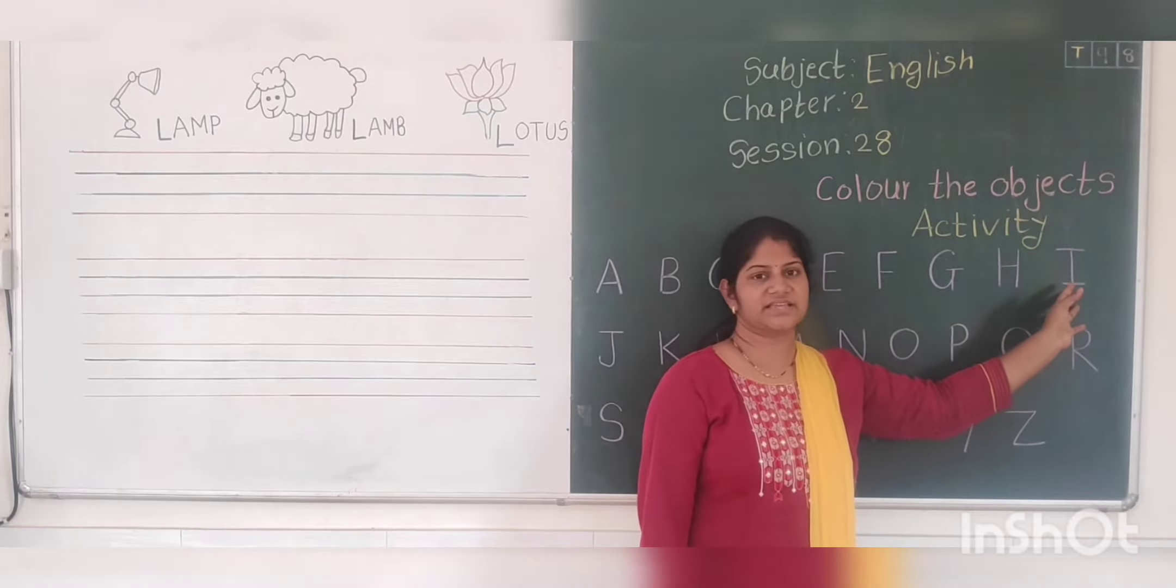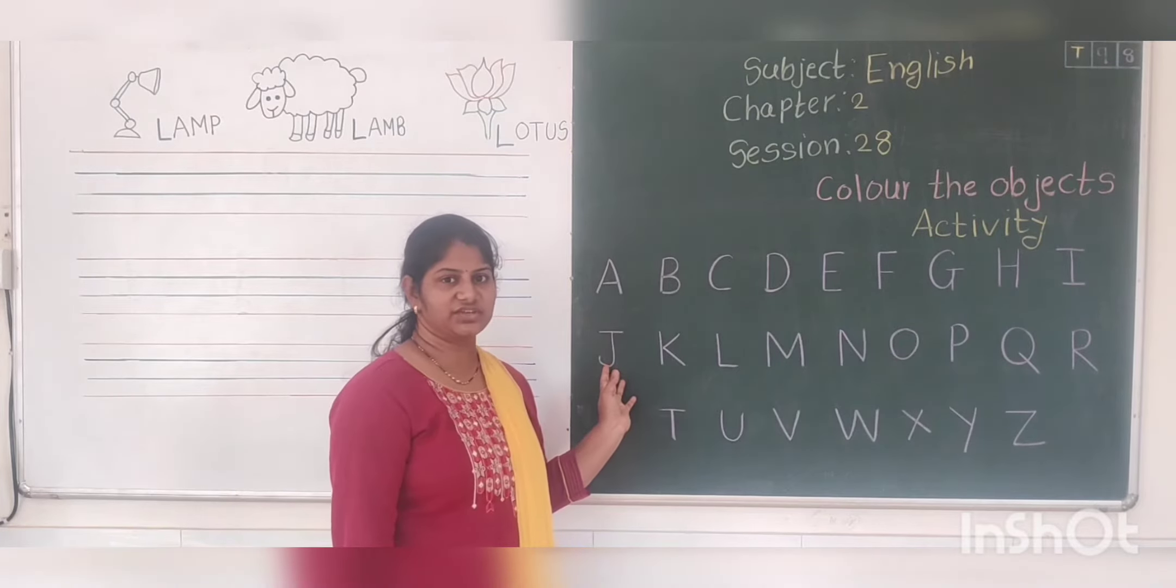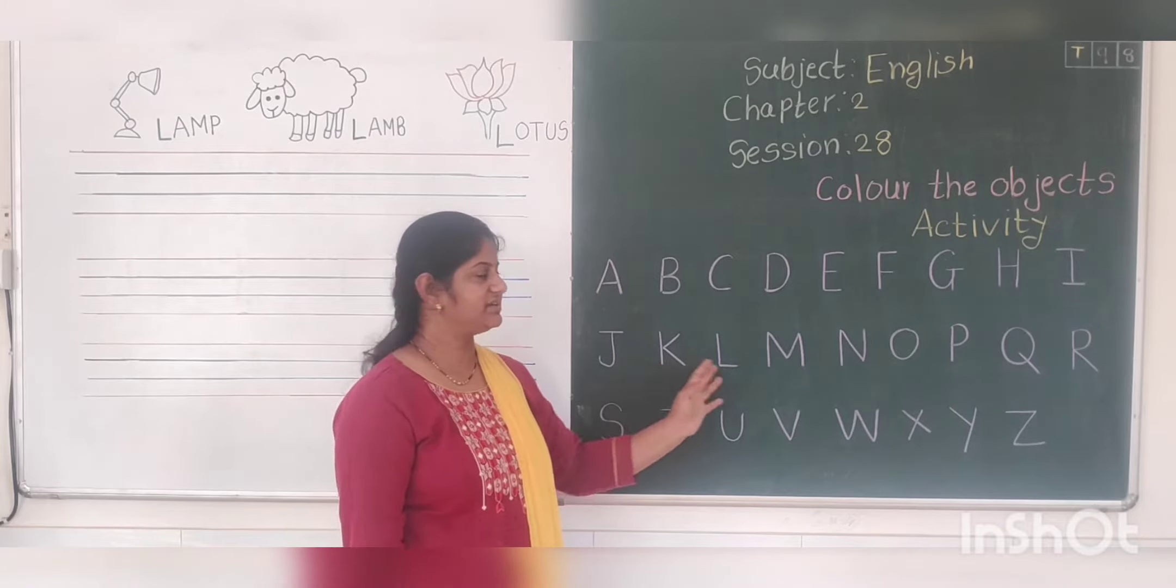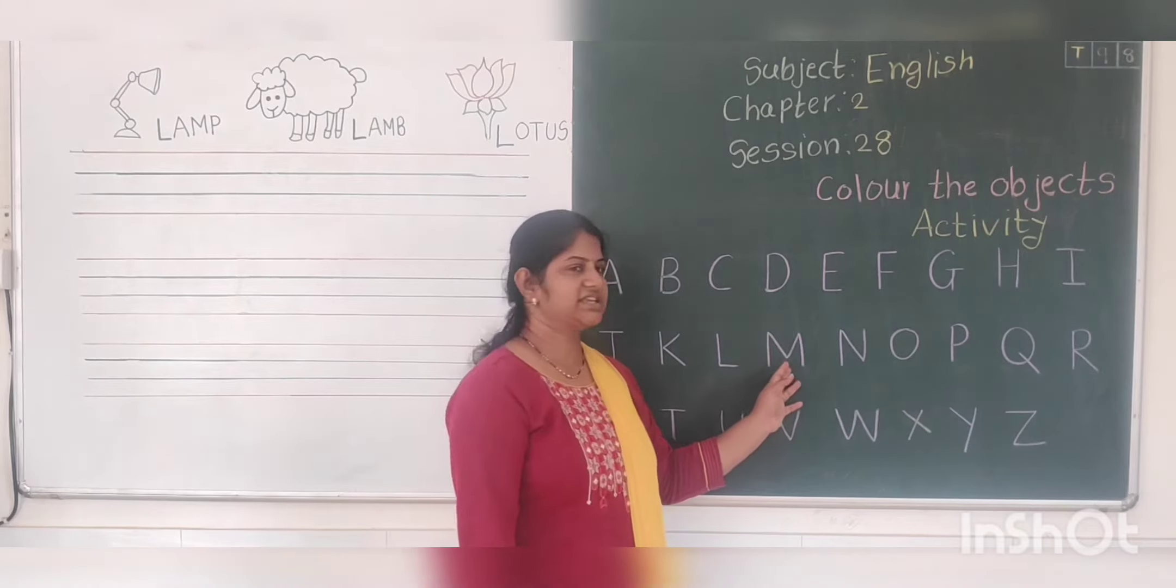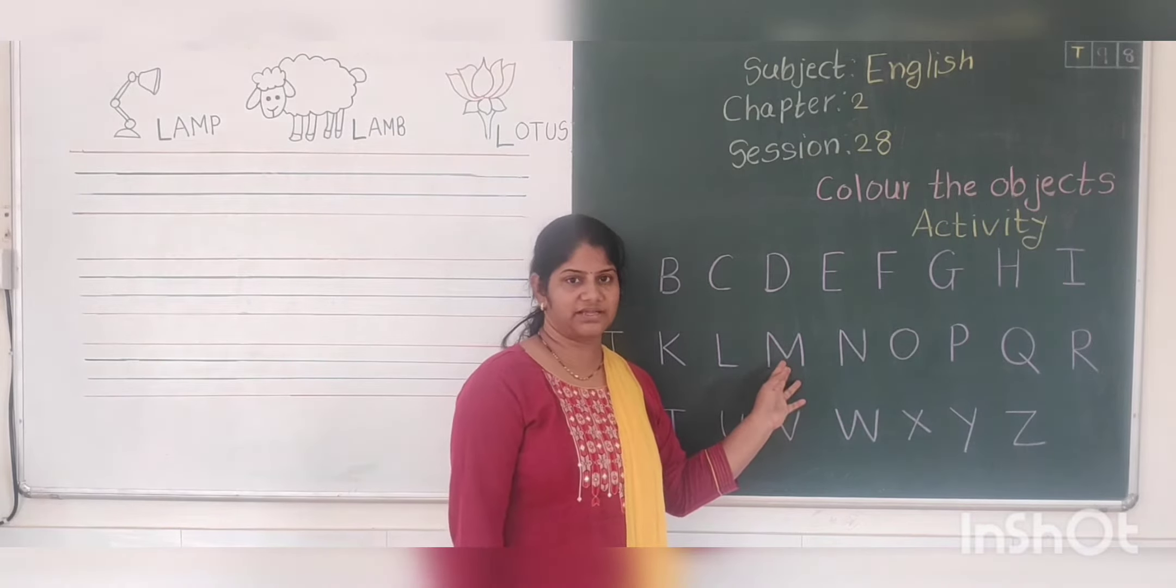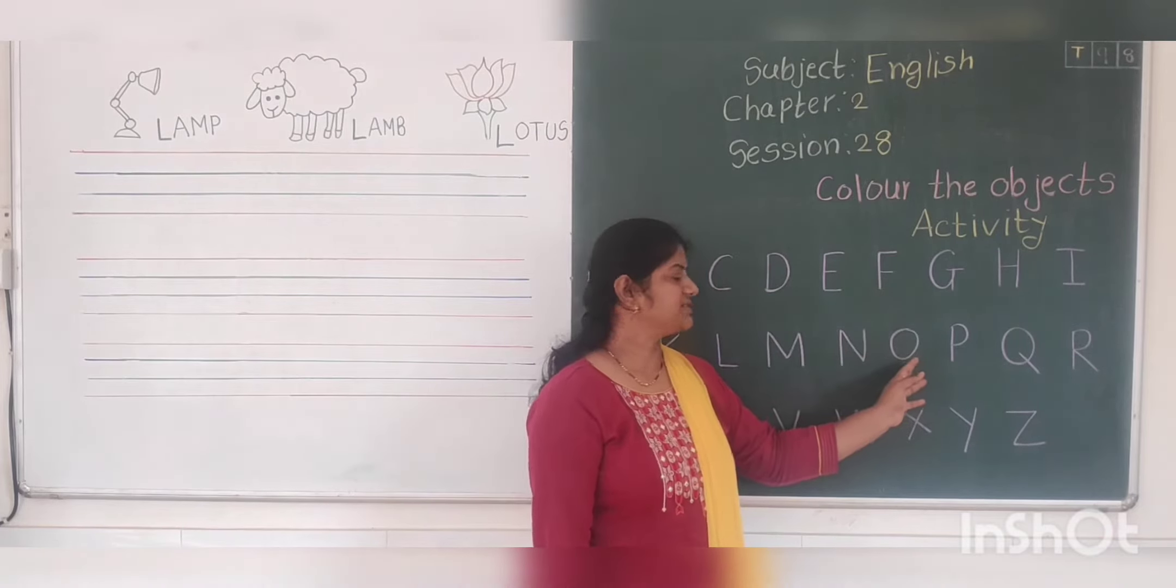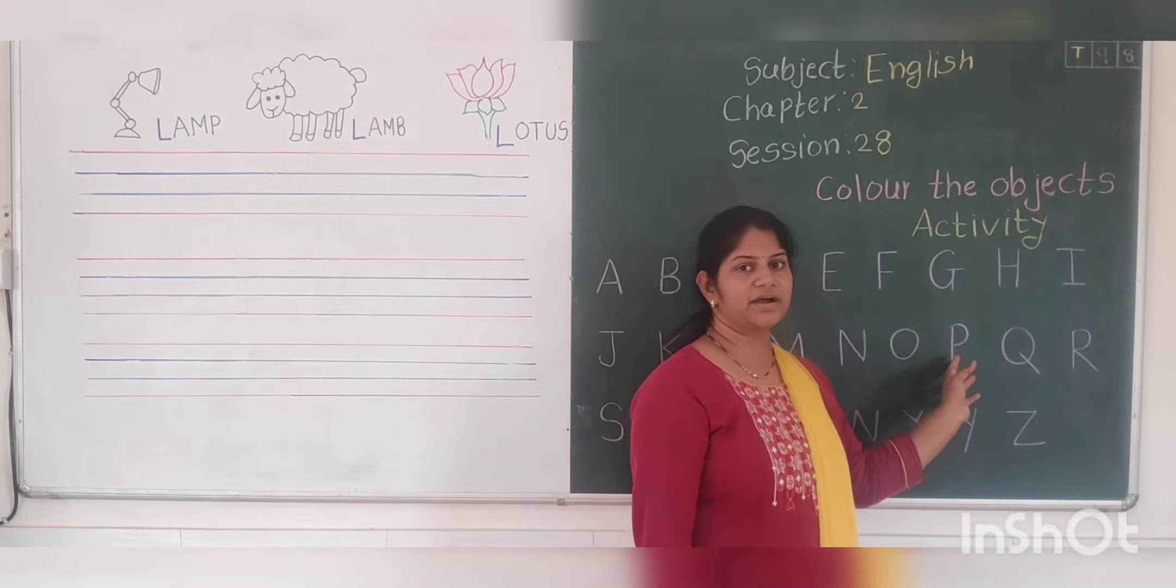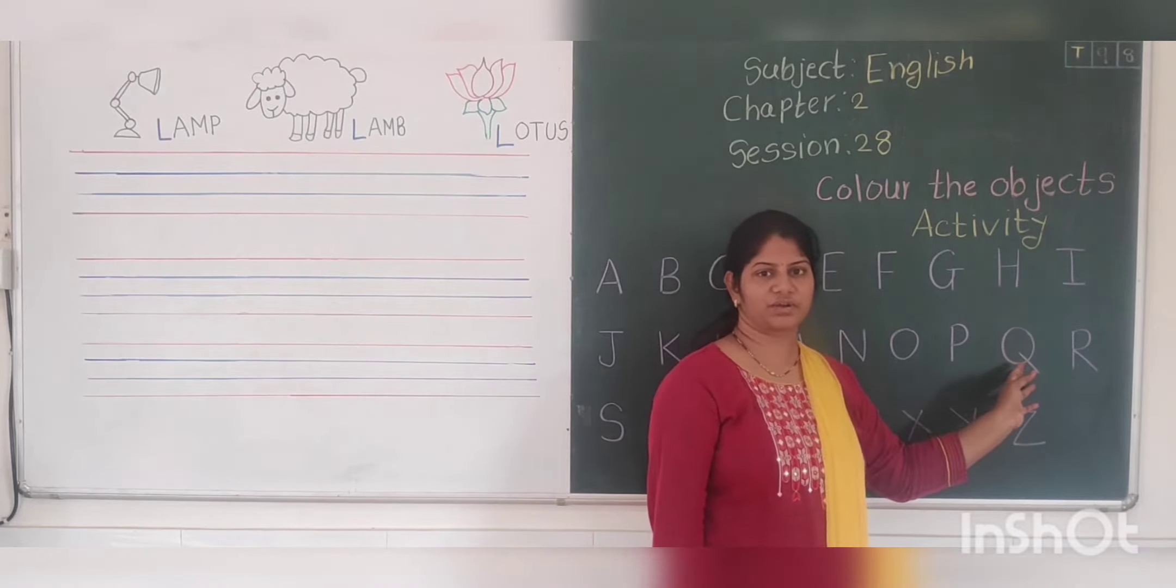I says I, I for igloo. J says J, J for joker. K says K, K for kite. L says L, L for lion. M says M, M for monkey. N says N, N for nose. O says O, O for orange. P says P, P for parrot. Q says Q, Q for queen.